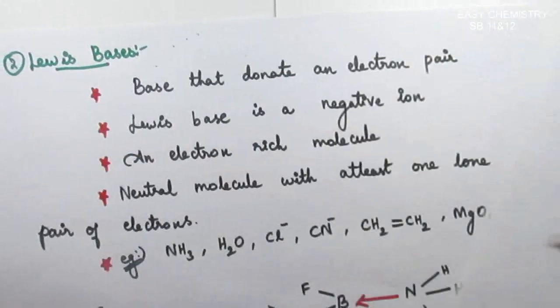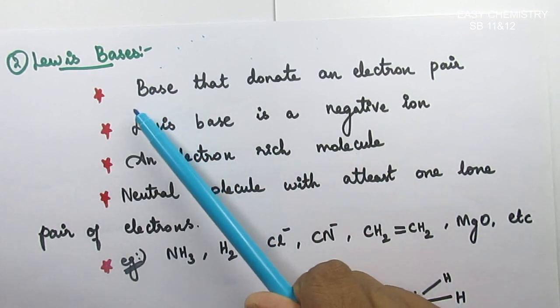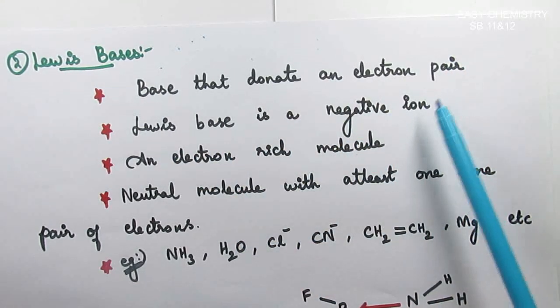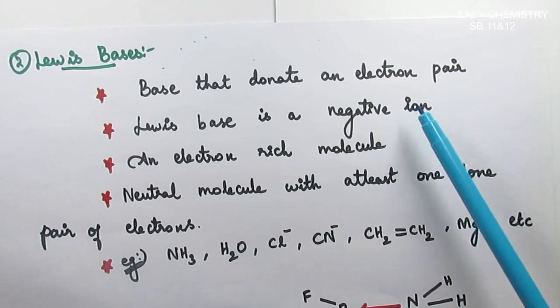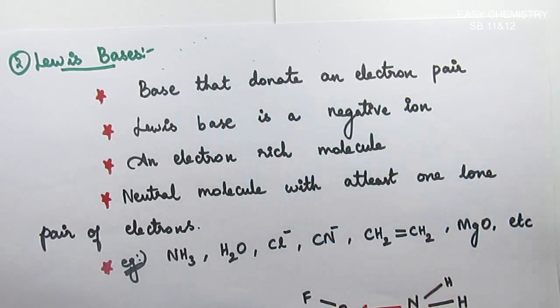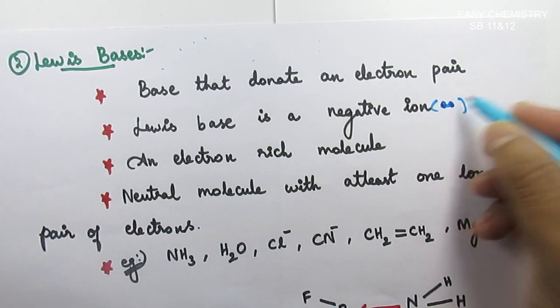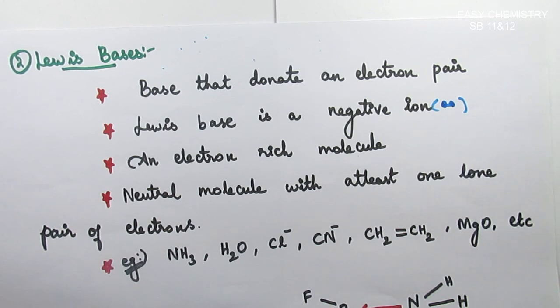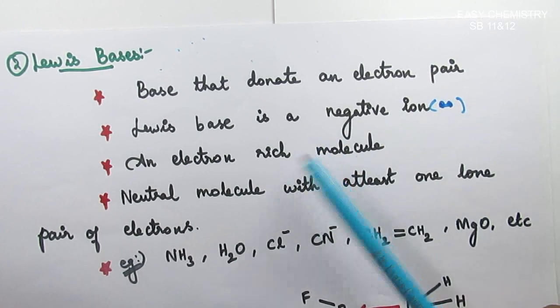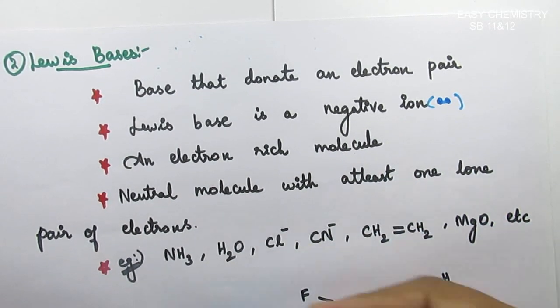Now we will discuss the Lewis base. It donates the electron pair. Lewis base is a negative ion. It carries negative charge. What do we say? Nucleophile is the term. Nucleophiles have two electrons. Minus means two extra electrons. One minus charge means two electrons added. So we get this as Lewis base. There are neutral molecules with lone electron pairs.